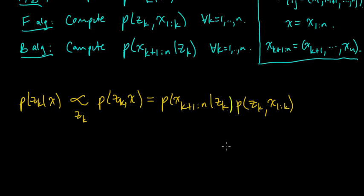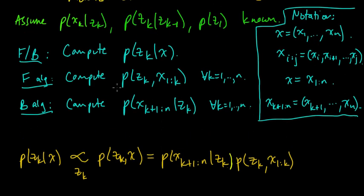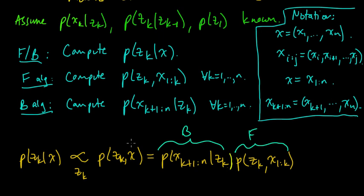So that simplification gives us: P(ZK | X) is proportional to P(XK+1:N | ZK) times P(ZK, X1:K). The first factor is exactly the backward part and the second is the forward part. By multiplying these together we get something proportional to what we wanted. Since this is over a finite set, it's easy to normalize — we just sum over that finite set to get the normalizing constant and recover the distribution. The key to getting this posterior distribution on the Z's given the X's is performing these forward and backward steps.